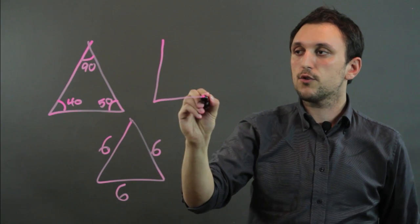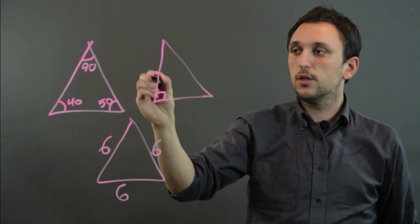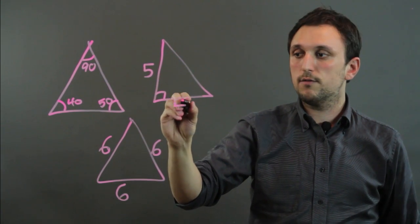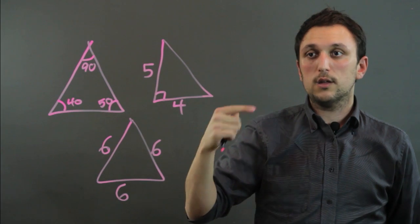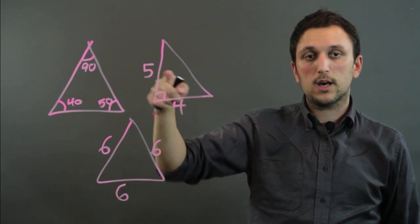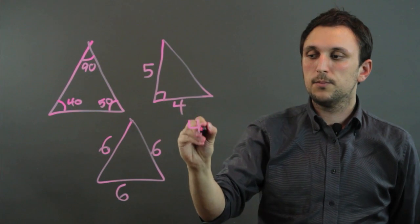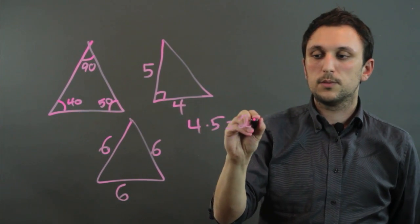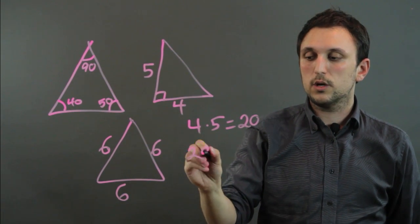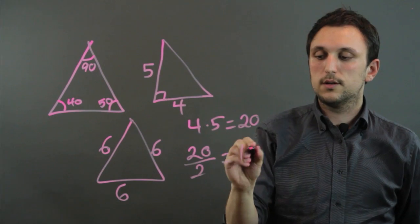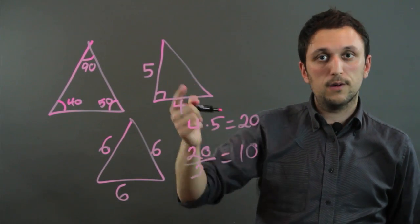So let's say we have a right triangle with a height of 5 and a base of 4. So the area is one half base times height. So 4 times 5 is 20. Divided by 2 is 10. So 20 over 2 equals 10. So that would be the area of a triangle.